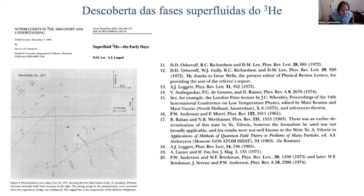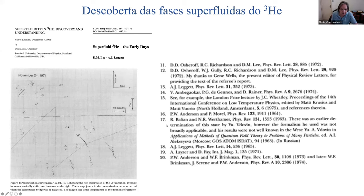Na época, a gente não sabia o que era isso, que fase era essa. Posteriormente, depois de um novo trabalho, isso foi reconhecido. O trabalho do Anderson e do Morel, que eu mencionei antes, é de 1961; o do Balian e Werthamer é de 1963. Esses trabalhos teóricos estavam estudando a possibilidade de fases exóticas em supercondutores com momento angular diferente de zero. Eles não estavam explicitamente pensando só no Hélio. Esses trabalhos teóricos antecedem, por dez anos mais ou menos, a descoberta das fases superfluidas do Hélio.